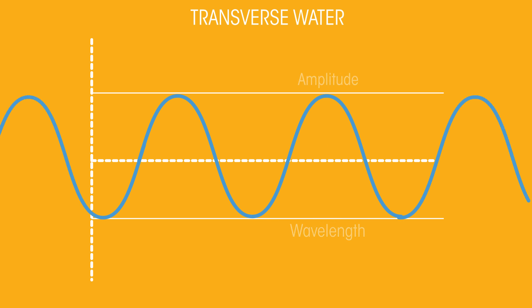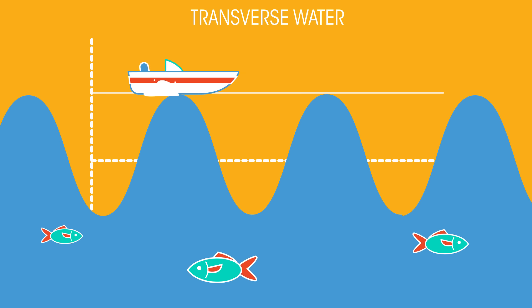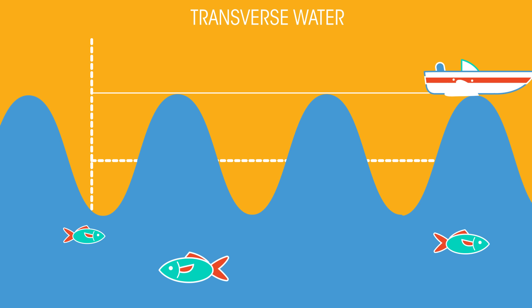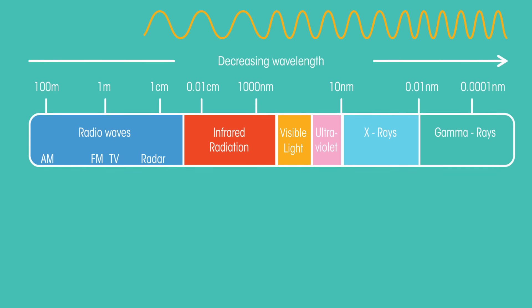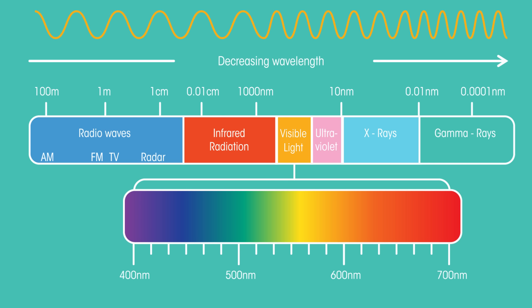The waves on the surface of water are transverse waves — they make the water surface go up and down. All types of electromagnetic waves, like visible light, are also transverse waves.